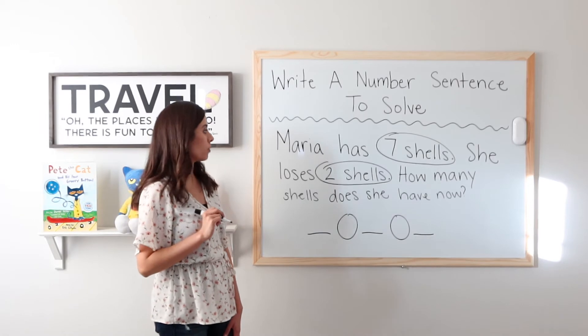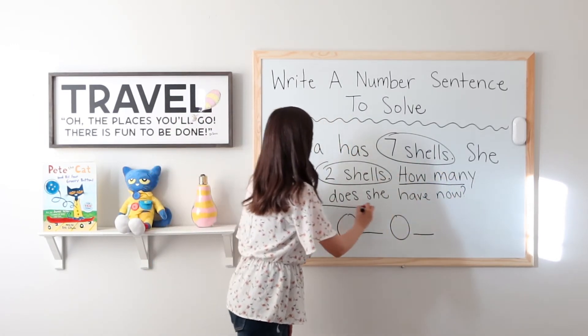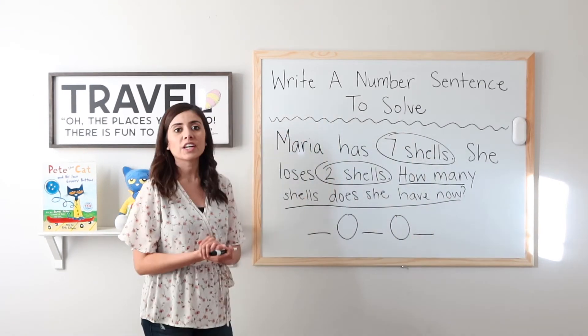Step three, underline what we need to find out. That is our question. How many shells does she have now? Okay, very good.